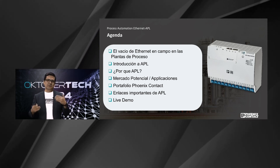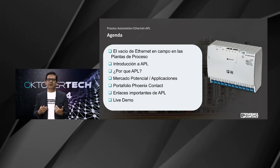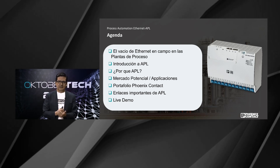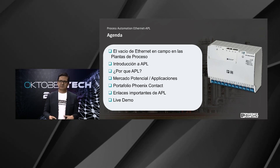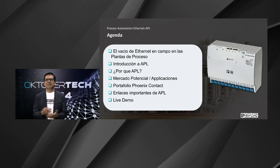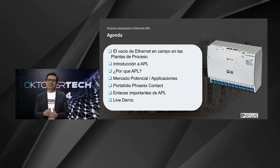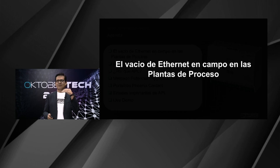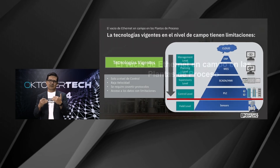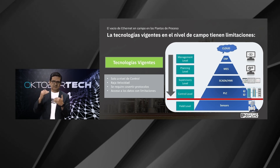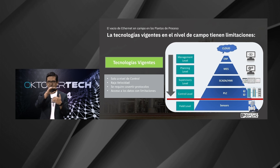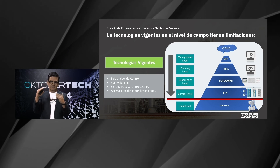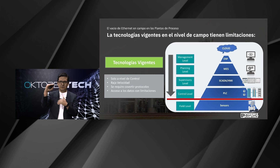Probablemente muchos de ustedes no solamente han escuchado de APL desde nosotros, sino que también desde algunos otros fabricantes, como por ejemplo Endress+Hauser, que hoy día nos está apoyando en el demo que vamos a mostrar. Vamos a hacer un cierre con el demo en vivo. Primero vamos a partir con el tema del vacío del Ethernet en campo. Si ustedes se fijan, el Ethernet no ha logrado pasar esa línea roja que conecta la parte de control en la pirámide de automatización con la parte de la sensorica.